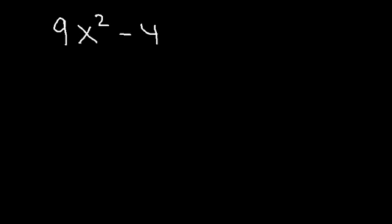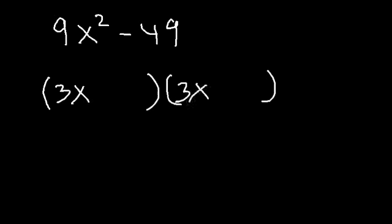Now what about 9x squared minus 49? Notice there's no GCF we can remove in this example. However, we can just use the difference of squares method directly. The square root of 9x² is 3x — the square root of 9 is 3 and the square root of x squared is x. The square root of 49 is 7. So it's going to be (3x minus 7)(3x plus 7).